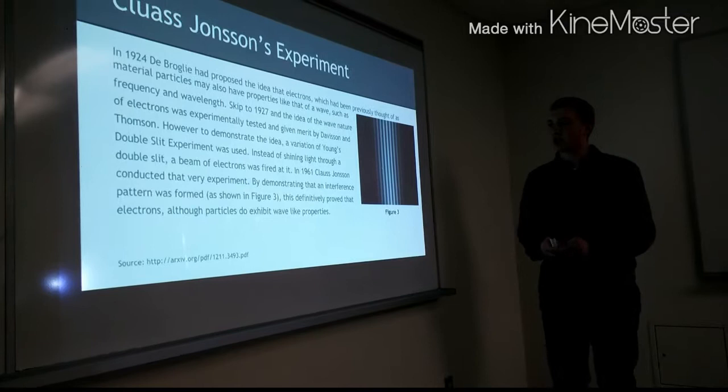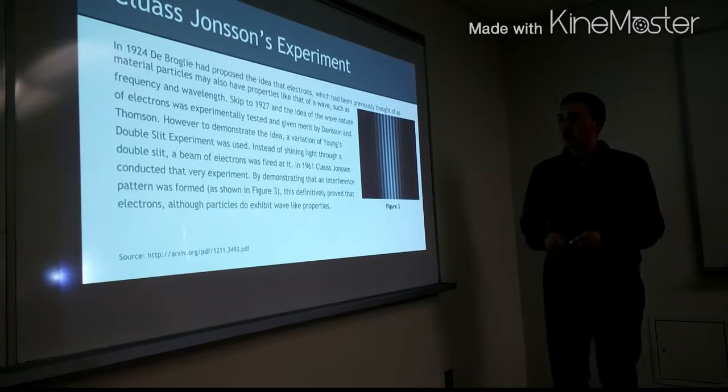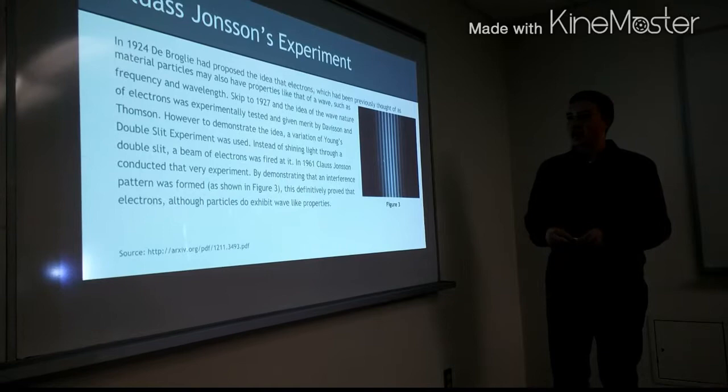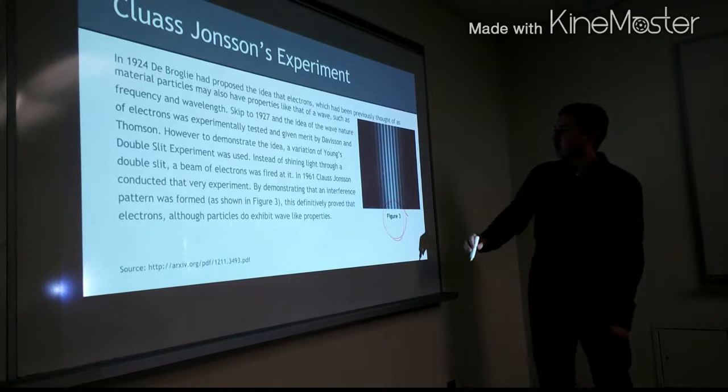However, to demonstrate the idea to his colleagues and to the general public, a variation of Young's double slit experiment was used. Instead of shining a light through a double slit, a beam of electrons was fired at it. So in 1961, Klaus Johnson actually conducted this very experiment. By demonstrating that an interference pattern was formed, as shown in figure 3, this definitively proved that electrons, although particles, do exhibit wave-like properties. This is shown through the interference pattern.